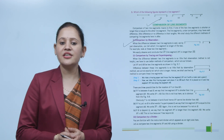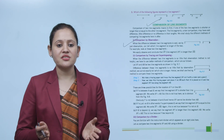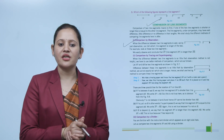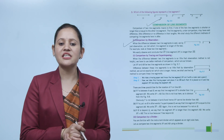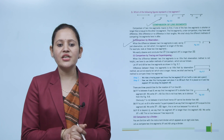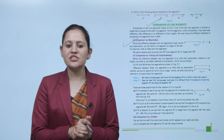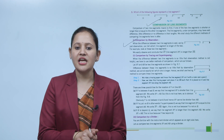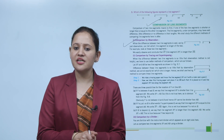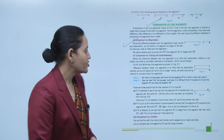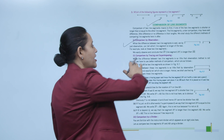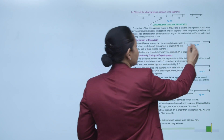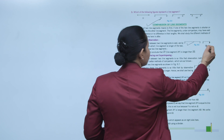When the difference between two line segments is vast, by just observing we can tell which line segment is longer. For example, looking at two line segments, we easily observe and conclude that line segment XY is longer than line segment AB. By only looking, we can tell that XY is greater than AB.